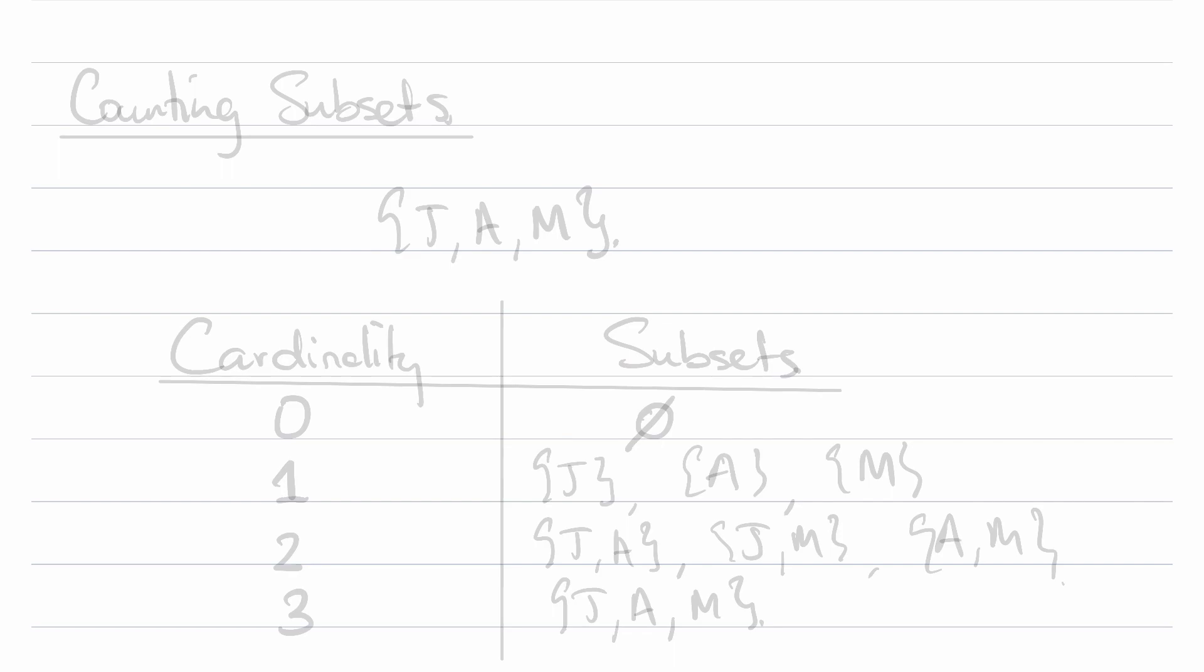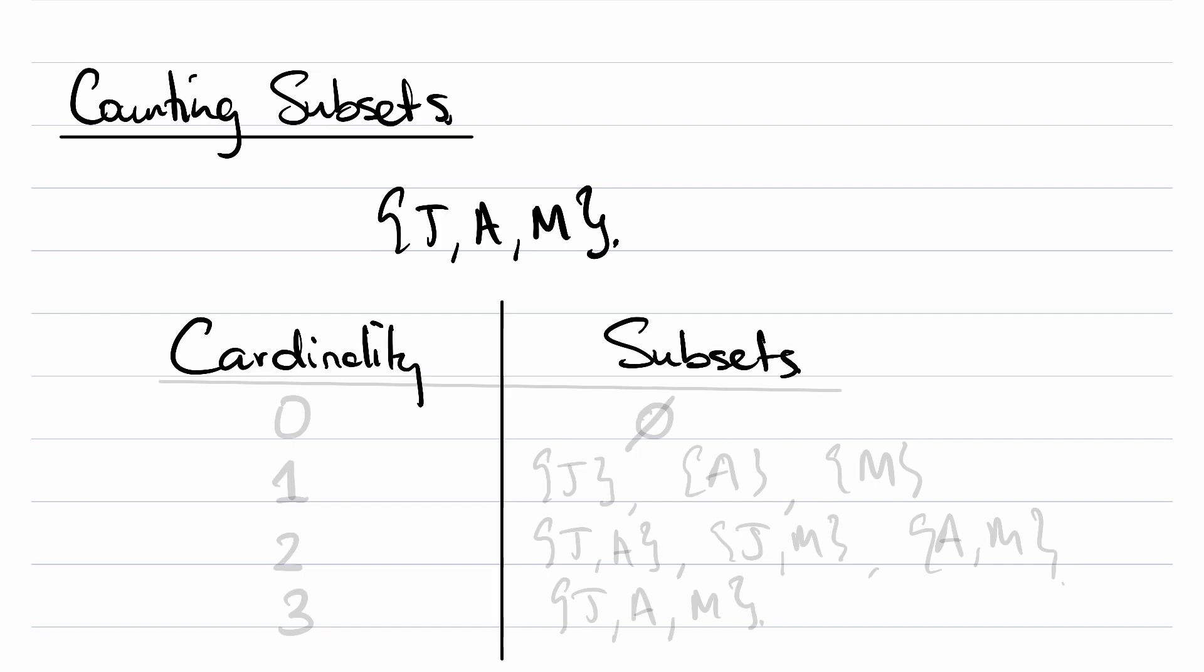Now that we have an idea of the size of sets, we can start counting things with regards to sets. In particular, I want to count subsets. Let's look for a second at our set that contains three letters J, A, and M. I want to figure out how many subsets this particular set has. And I can organize this by cardinality.